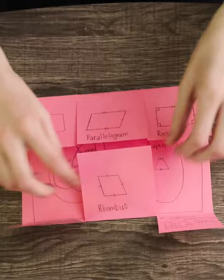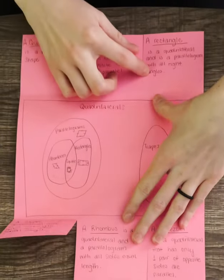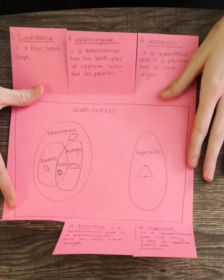And on the inside on the tabs you're going to have the definitions of the quadrilaterals and then a Venn diagram.